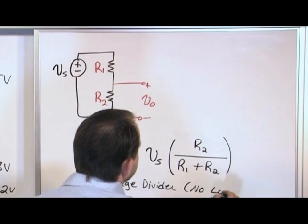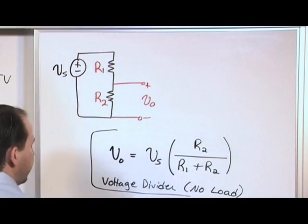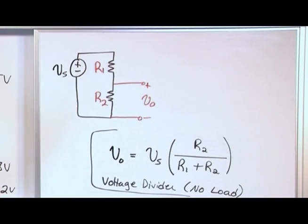I'm going to put no load. So what this means is, if I build a circuit like this and hook a voltmeter across and measure, remember voltmeter has super high resistance so we don't alter the circuit.